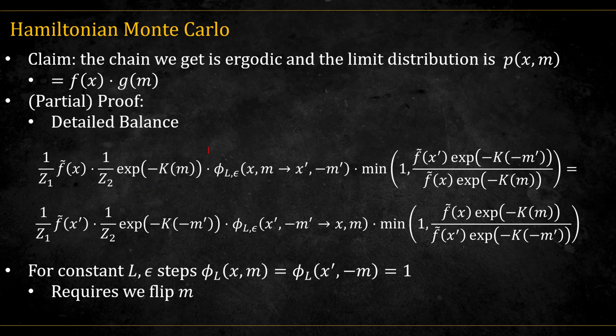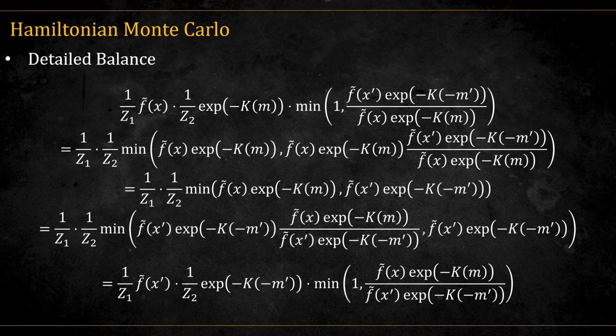Starting from the current state, we multiply the probability of proposing a new state through our dynamics by the probability of accepting it, and show that this is equal to the corresponding probability of moving in the reverse direction. This proposal probability, which we'll call phi, simplifies to 1 when we use fixed L and epsilon. Remember that we always flip the momentum at the end. This flip is crucial for ensuring symmetry between forward and reverse moves. We can also randomize L and epsilon by sampling them from a distribution. If done properly, the phi terms remain symmetric, and detailed balance still holds. If the phi's are equal to 1, we can remove them, and then detailed balance becomes very simple. To show it, we just insert the outside term into the min operator, and then reverse the process. If there is some randomness in the phi's, as long as it's symmetric, we can also incorporate it into the detailed balance.